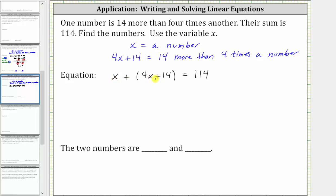x plus four x is equal to five x, or one x plus four x is equal to five x, and therefore the left side simplifies to five x plus 14, which is equal to 114.